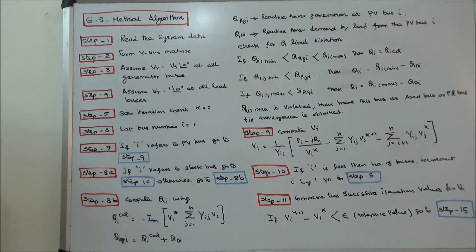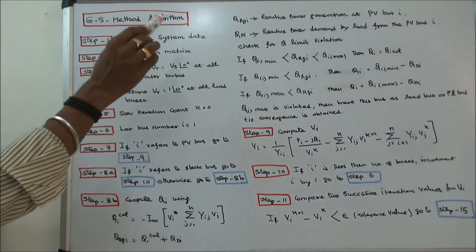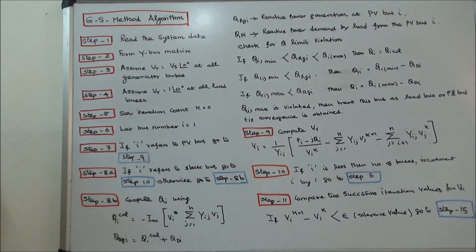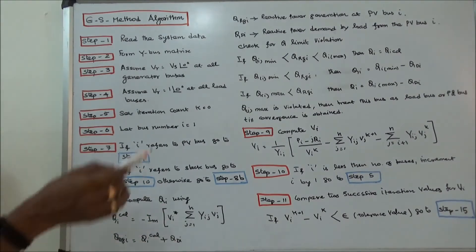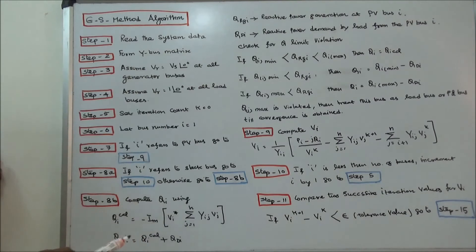Step 8b: Compute reactive power using this formula. Here QRGI, that is reactive power generation at PV bus I, is equal to QI calculated plus QDI. QDI is the reactive power demand by load from PV bus I.